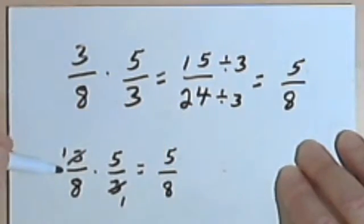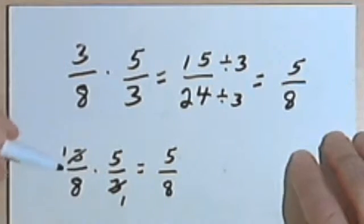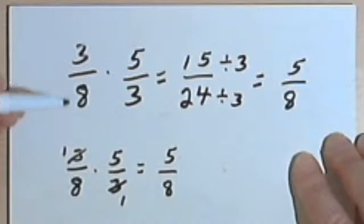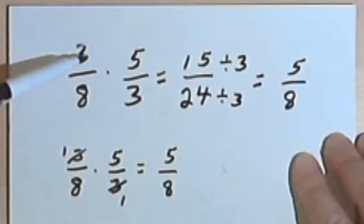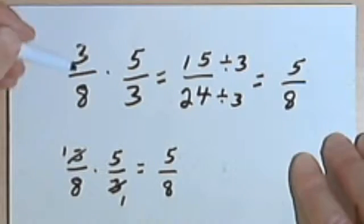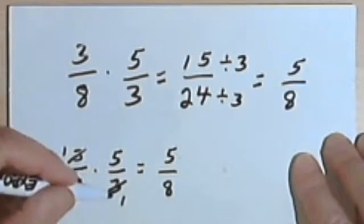And I've saved some steps along the way, and I end up with exactly the same answer. So basically, what you want to do when you start out is look at the original problem. If you see any numbers that are the same in both the numerator and the denominator, you can cross both of those numbers out, just like I did here.